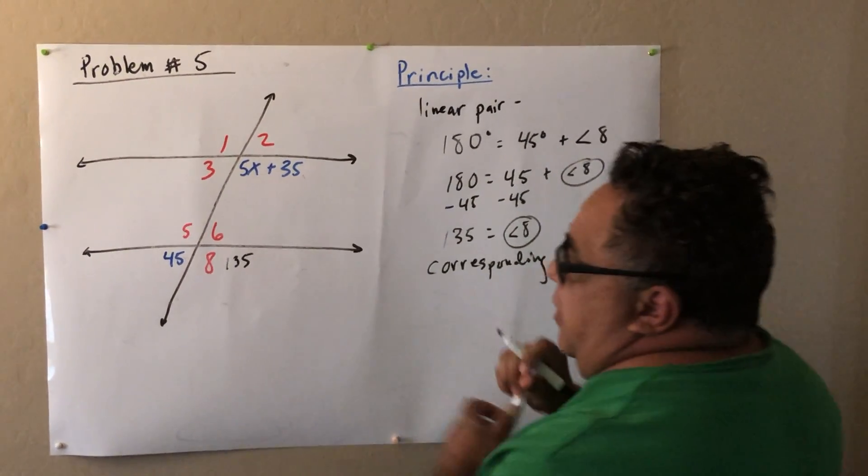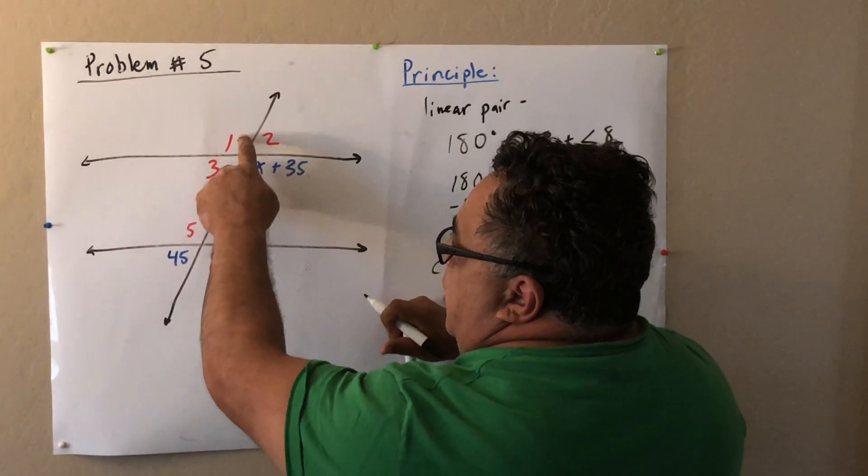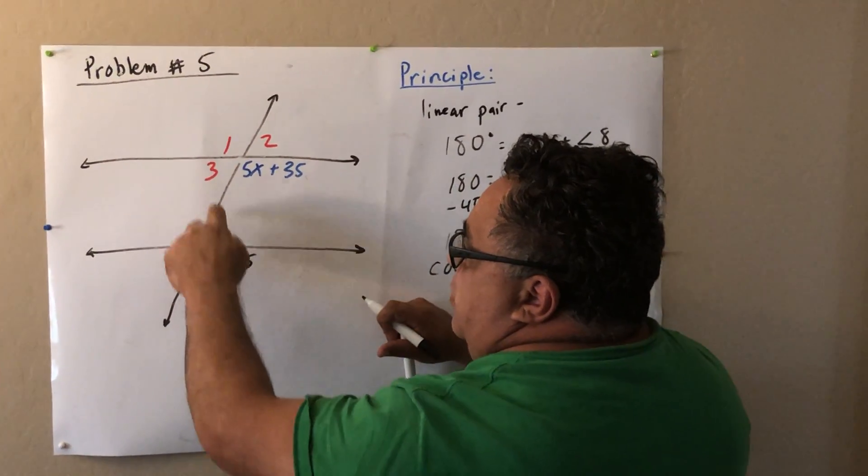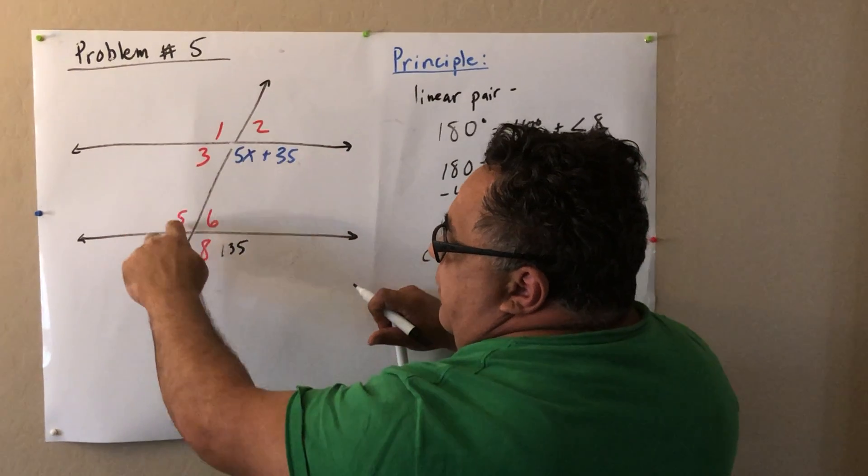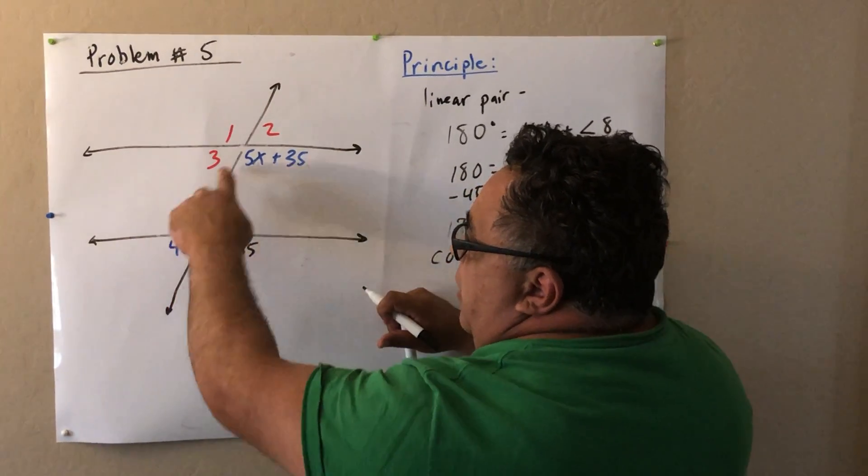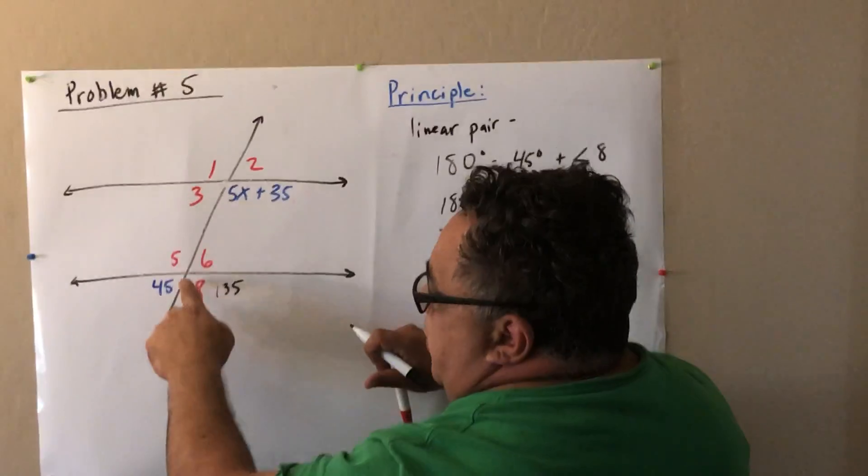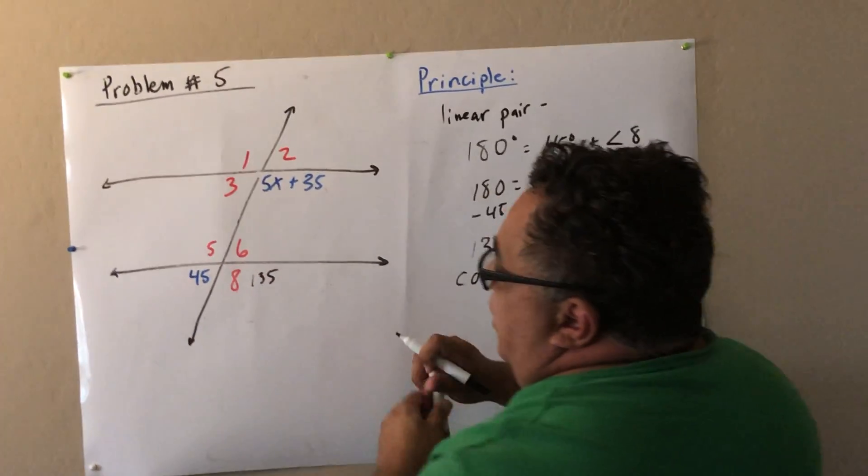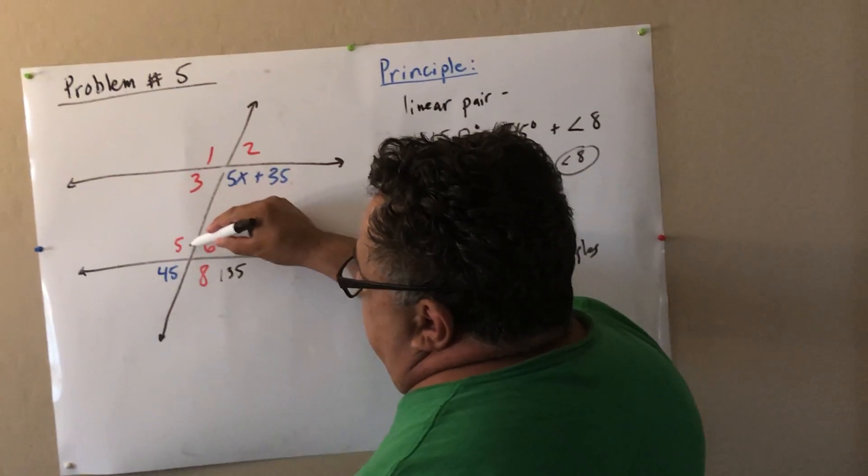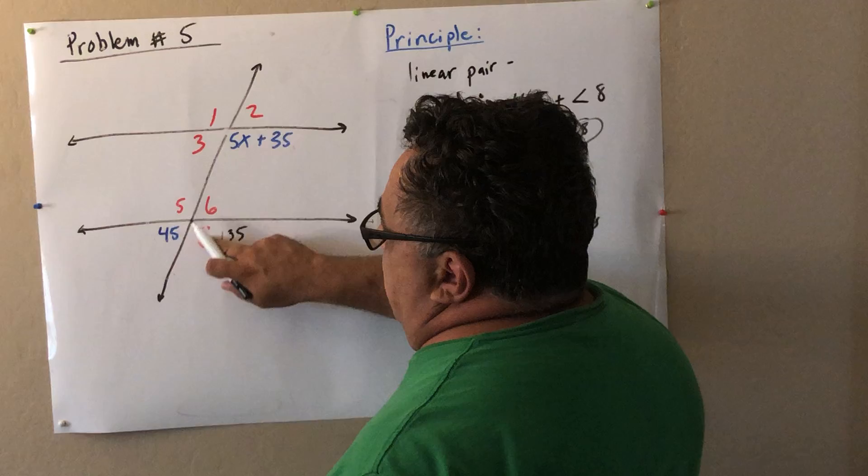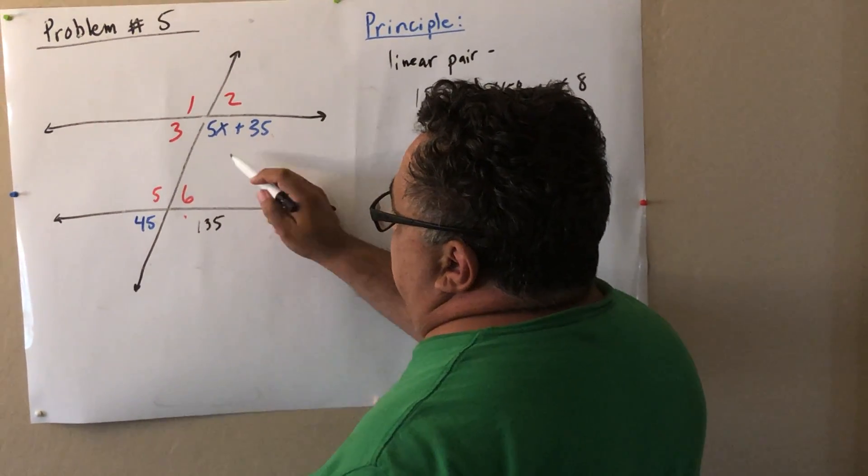Corresponding angles means this right here. If I have an intersection right here, 1 is to 5, 2 is to 6. Why? 1 is top left, 5 is top left here. Up here, 2 is on the top of the right. Up here, 6 is on the top of the right. So, 1 corresponds to 5 here, 2 corresponds to 6 here. Well, what corresponds to 8 here? What corresponds to 135 degrees?